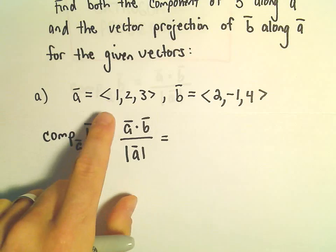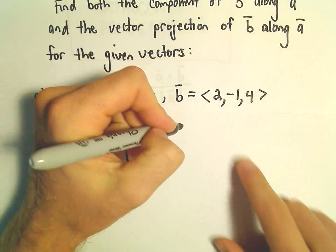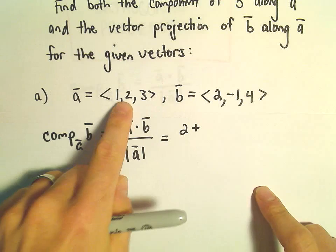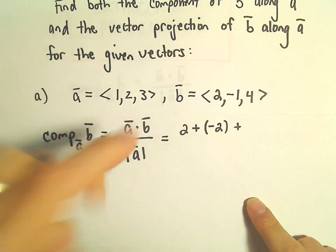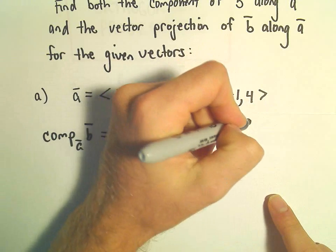So, to do the dot product, we just multiply respective components, so 1 times 2 will be 2. We'll take 2 times negative 1, that'll be negative 2, then we'll add to that 3 times 4, which is going to be 12.